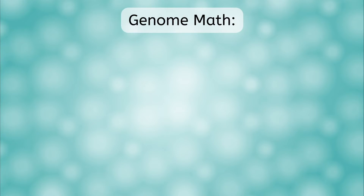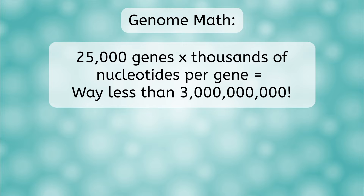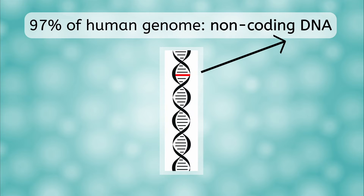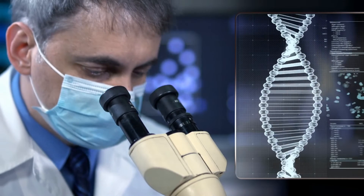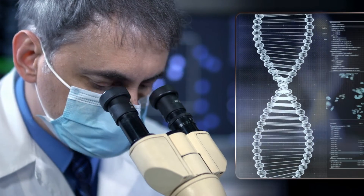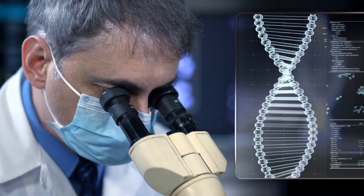Now, if you've been doing the math in your head, you may have noticed that the numbers don't quite add up. Even at 25,000 genes, and possibly thousands of nucleotides per gene, that still doesn't get us anywhere close to using up all 3 billion nucleotides in our genome. It is thought that only around 3% of human DNA codes for protein. The rest of those nucleotides are called non-coding DNA. If it doesn't code for a protein, why do we have it? At one time, scientists thought it was mostly junk DNA, but now they are discovering that it may play a role in controlling the activity of genes — though there's still a lot we haven't figured out about it.